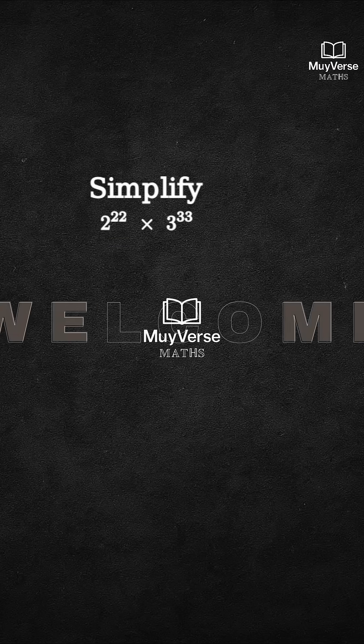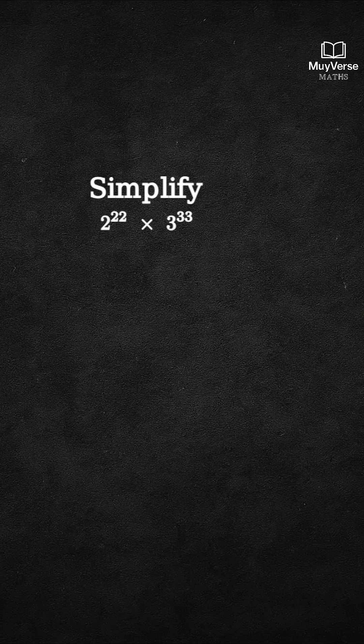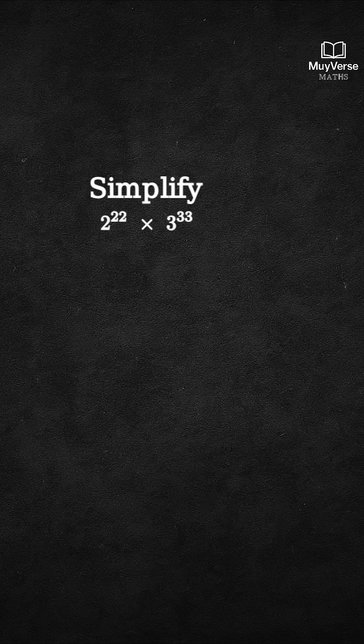We will simplify the expression 2 to the 22 times 3 to the 33, step by step, with quick visual grouping. So every move is obvious.